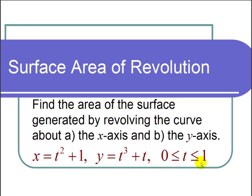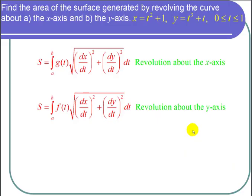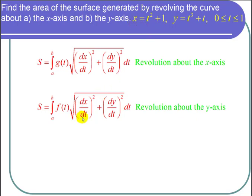First let's recall the formulas to find the surface area of revolution about the x-axis and the y-axis. The surface area about the x-axis equals the integral from a to b of g(t) — which is what y equals — times the square root of (dx/dt) squared plus (dy/dt) squared, dt. The surface area about the y-axis equals the integral from a to b of f(t) — which is what x equals — times the square root of (dx/dt) squared plus (dy/dt) squared, dt.